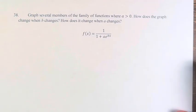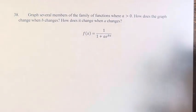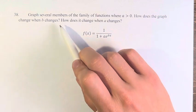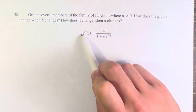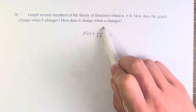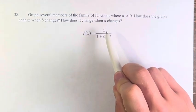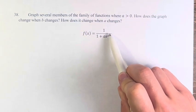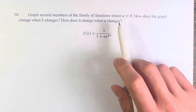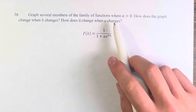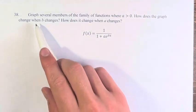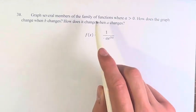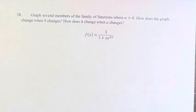Hello, and welcome back to another video. In this problem, we're asked to graph several members of the family of functions f of x equals 1 over 1 plus ae to the bx, where a is greater than 0. We're asked how does the graph change when b or a changes.